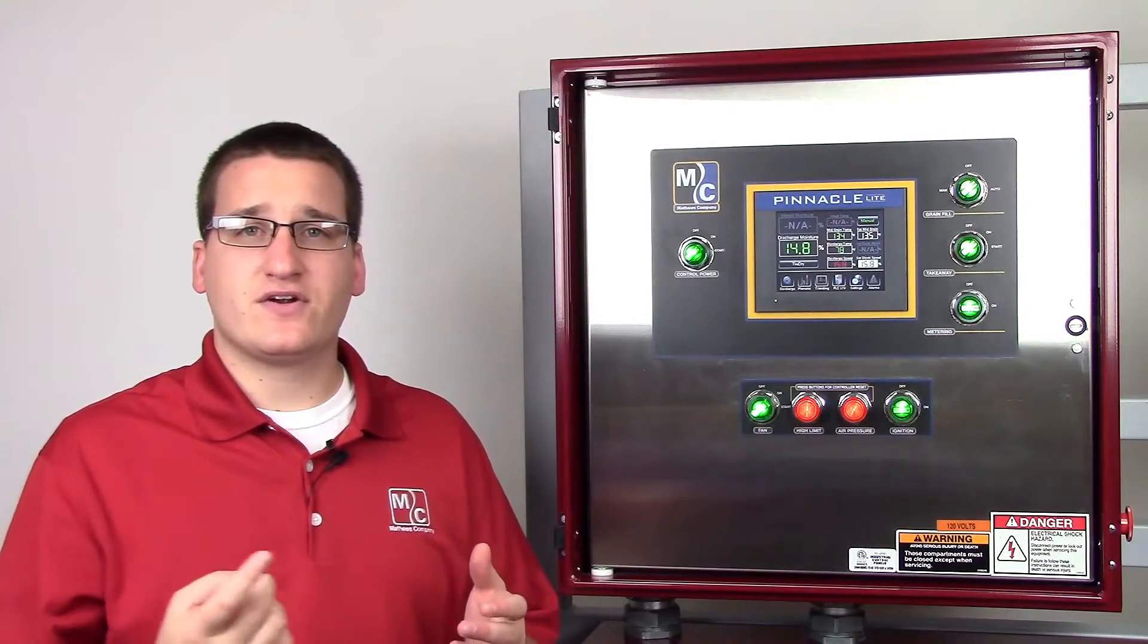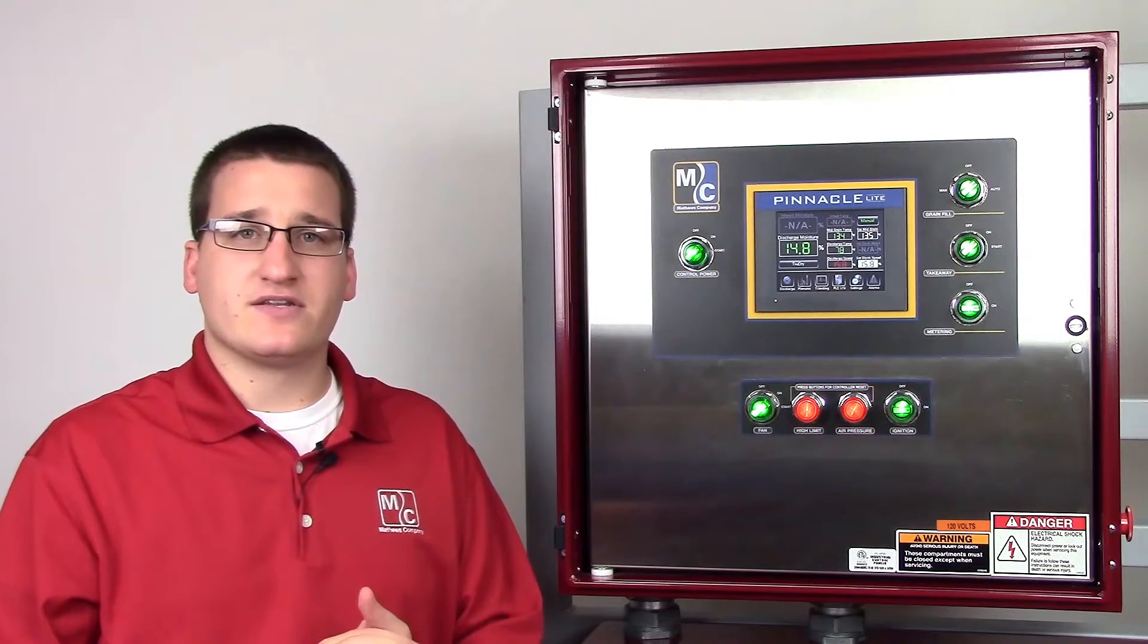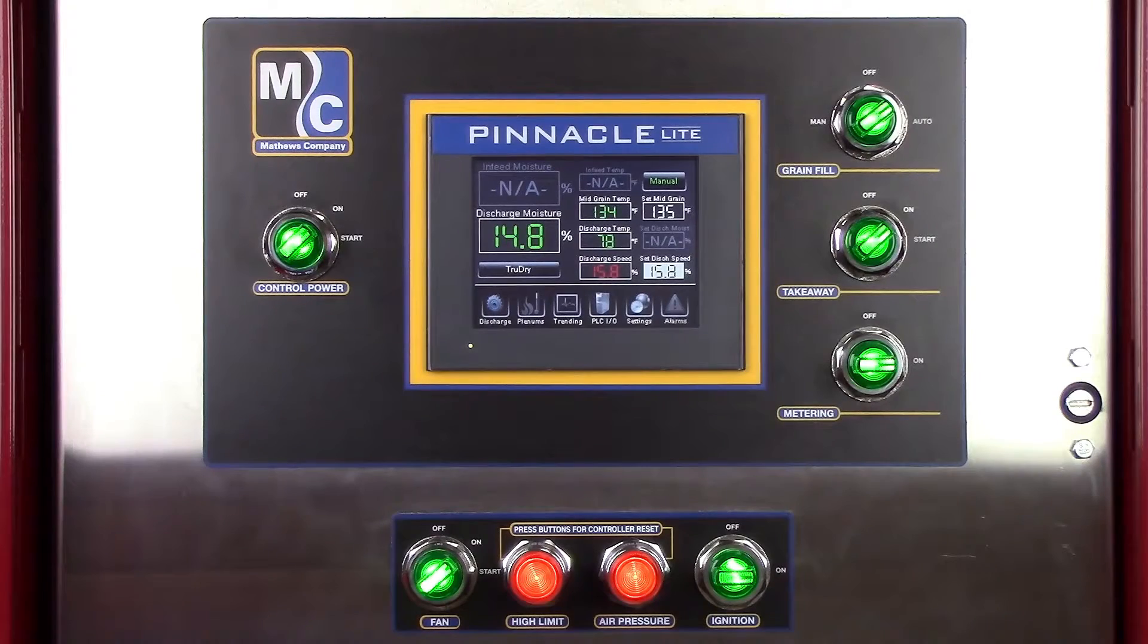This will begin turning the discharge sweep and grain will start to exit the dryer. The dryer is now running. You'll continue to monitor your set points and toggle your operating mode from the HMI throughout the day.